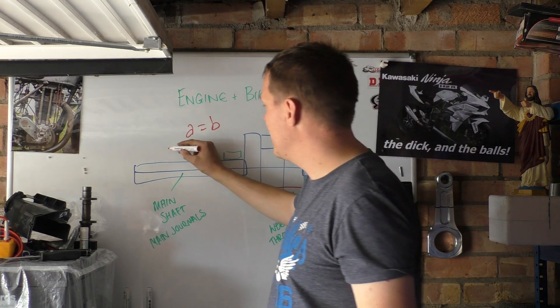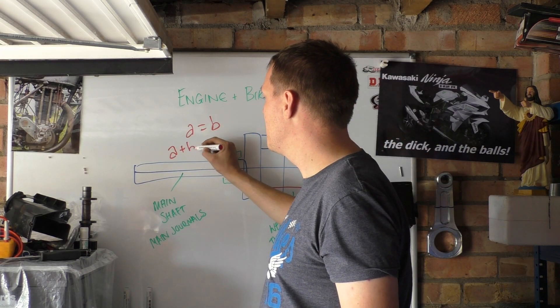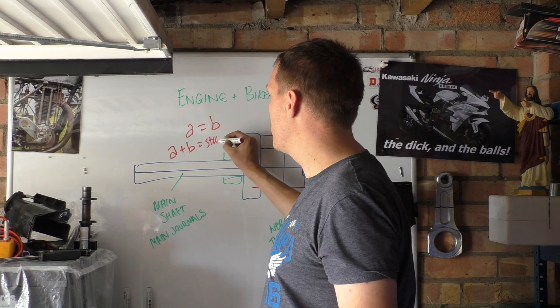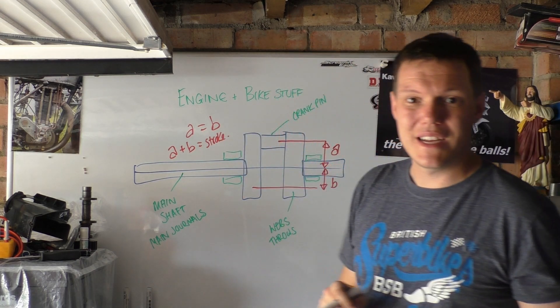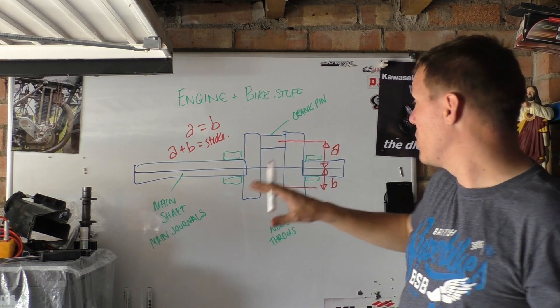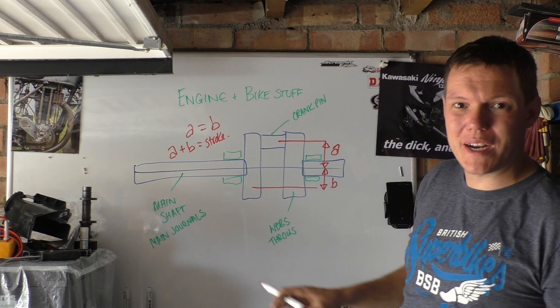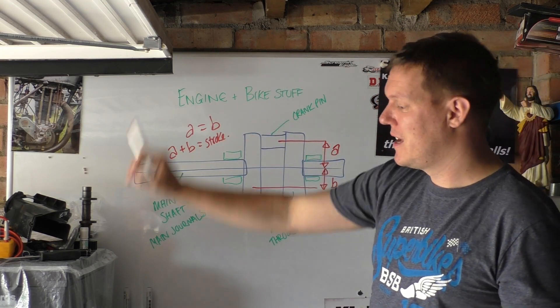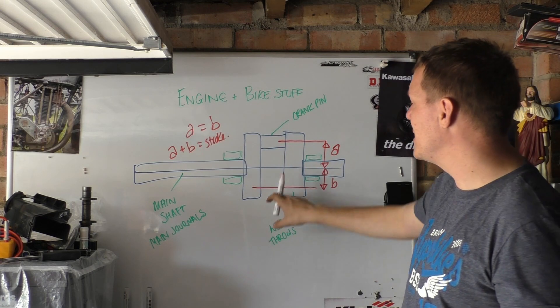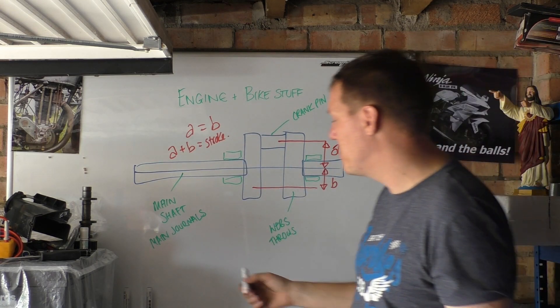Now A plus B is your stroke. Basically that's the center of your crank pin when it's in position A to the center of your crank pin in position B.